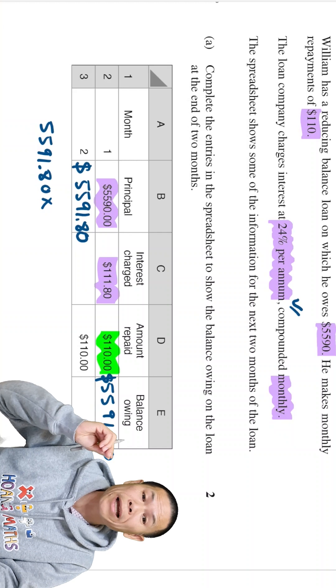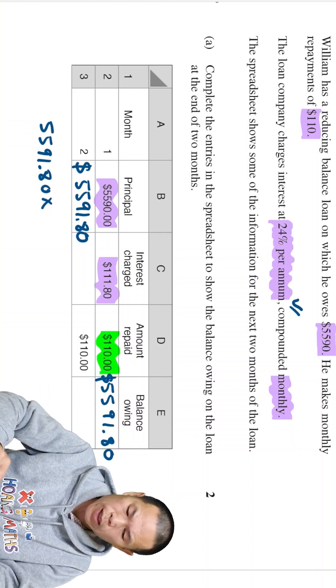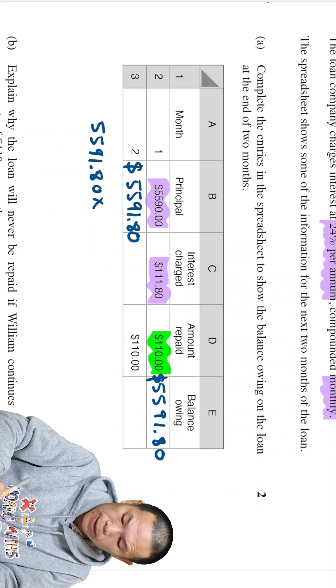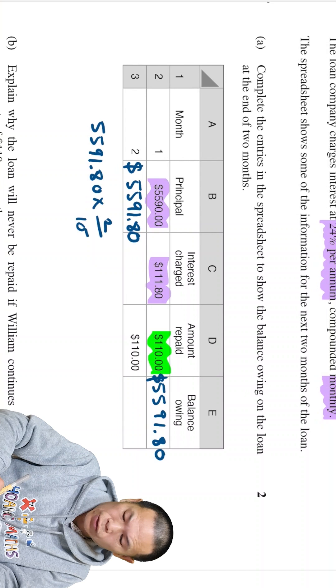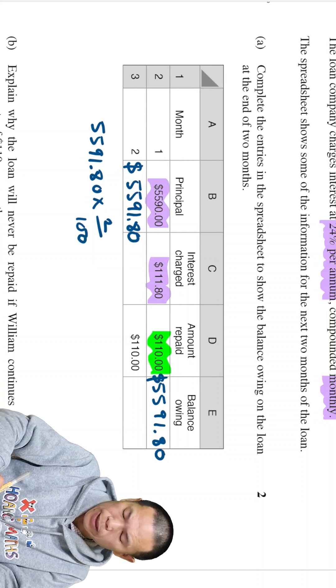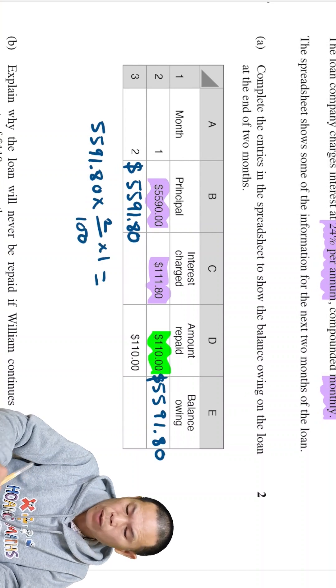And the interest is 24% per annum. So for one year, that is 12 months. So 24 divided by 12 gives me two. So 2%, 2 over 100. That's per month. That's the interest. And then we time by one because it's one month.